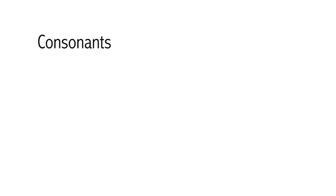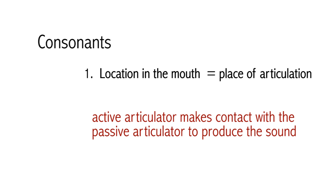For a vowel there is no obstruction — the air is able to flow freely through the vocal tract without being disturbed by anything getting in the way. So a consonant is made by making some kind of obstruction somewhere in the vocal tract. In order to describe a consonant, there are three things we need to know about it. The first thing is where in the mouth the obstruction is being made — this is called the place of articulation. It refers to the place in the mouth where the active articulator makes contact with the passive articulator to produce the sound.